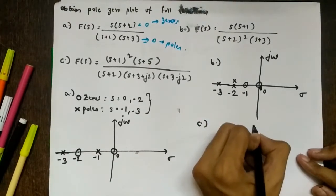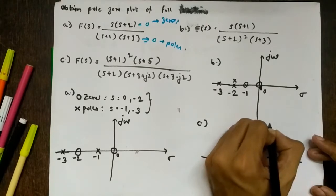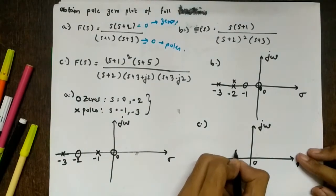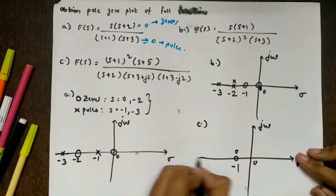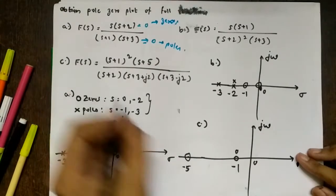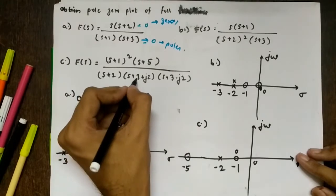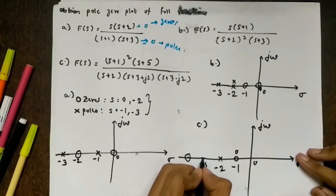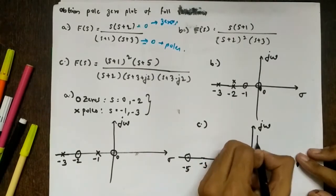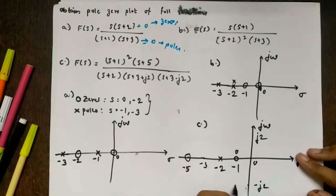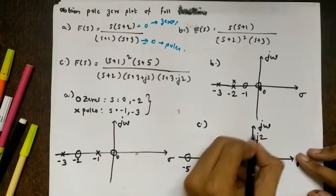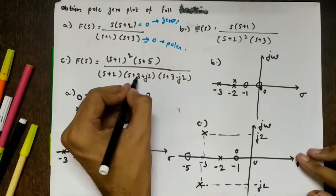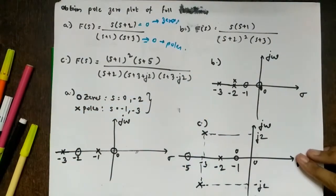For part C, on the σ–jω axis, there are two zeros at s = −1 and a zero at s = −5. There is a pole at s = −2, and complex conjugate poles at s = −3 ± j2. On the plot, −3 on the σ-axis combined with ±j2 on the jω-axis gives the two pole locations: −3 − j2 and −3 + j2.